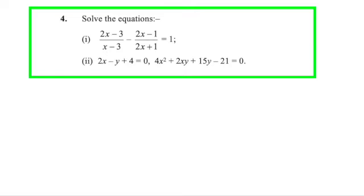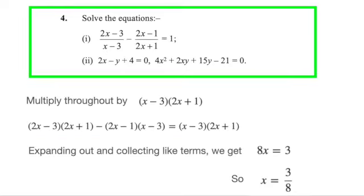We move on to question 4, and it looks like there are 2 equations to solve here. For the first one, to get rid of a denominator, we can multiply throughout by the factors x minus 3 multiplied by 2x plus 1, provided that x is neither 3 nor minus half, after which we seem to get a quadratic equation. However, clearing out terms, we see that the equation is actually linear, and solving it gives x equals 3 over 8. We would have to substitute this answer back into our original equation to ensure that the solution is indeed valid.